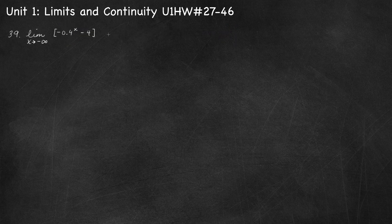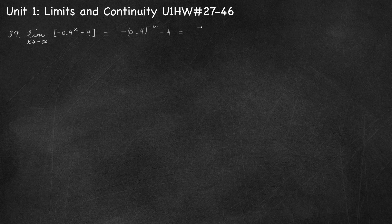Number 39, limit as x approaches negative infinity of negative 0.4 to the x minus 4. Substituting: negative 0.4 to the negative infinity minus 4. Rewriting: 1 over 0.4 to the positive infinity minus 4. Since 0.4 to the power infinity approaches 0, we get negative 1 over 0, which approaches negative infinity. So the limit does not exist.